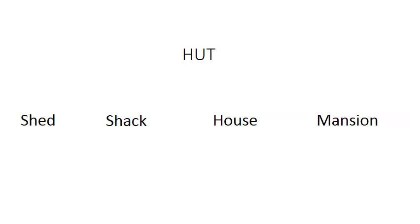When you say 'hut,' even though all we're really signifying is a thatched-roof house or mud and clay-made home, we also think of the exotic, we think of a tribal community — we don't think of downtown Manhattan. All of these things are happening in our heads while we think of just random words like hut, shack, house, or mansion. That's an example of how these words can constitute our lives.